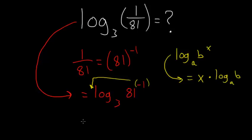So our problem now becomes minus 1 times log base 3 of 81, and this logarithm is asking 3 to what power gives us 81.